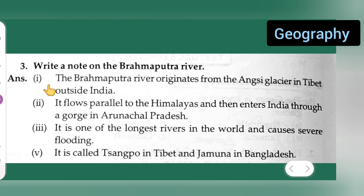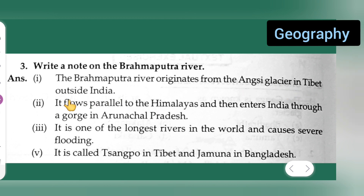First point: the Brahmaputra River originates from the NGC Glacier in Tibet, outside India. Second point: it flows parallel to the Himalayas and then enters India through a gorge in Arunachal Pradesh.